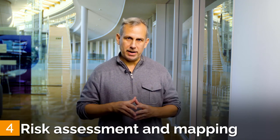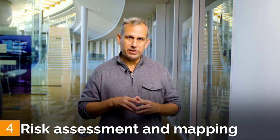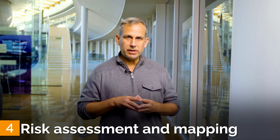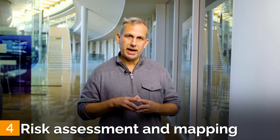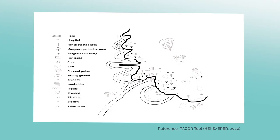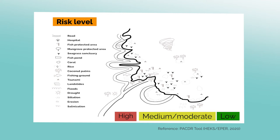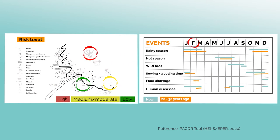Now let's move on to step four: risk assessment and mapping. After assessing potential hazards, exposure elements, and the resultant vulnerability, we can now conduct the risk assessment and mapping. When mapping risks, it is crucial to classify the level of risk. The risk map is an extension to a hazard map that includes exposure elements and vulnerability levels. You should be able to identify which elements are high risk, medium risk, and lower risk based on the assessment conducted so far. You can also develop different risk maps by seasons.